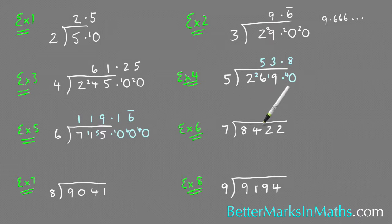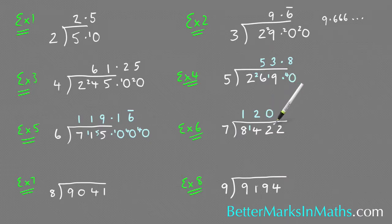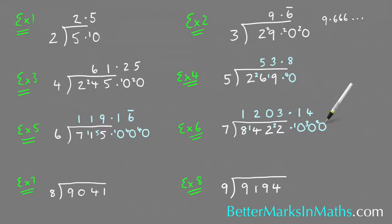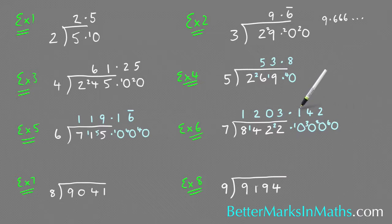Example six: how many sevens in 8422? How many sevens in eight? There's one with one left over. How many sevens in 14? There's two. How many sevens in two? None, carry that two. How many sevens in 22? There's three with one left over. Putting the point and zero, with one left over. How many sevens in ten? There's one with three left over. How many sevens in 30? There's four — four sevens are 28, so two left over. How many sevens in 20? There's two — two sevens are 14, so six left over. How many sevens in 60? Eight sevens are 56, so that's eight with four left over.